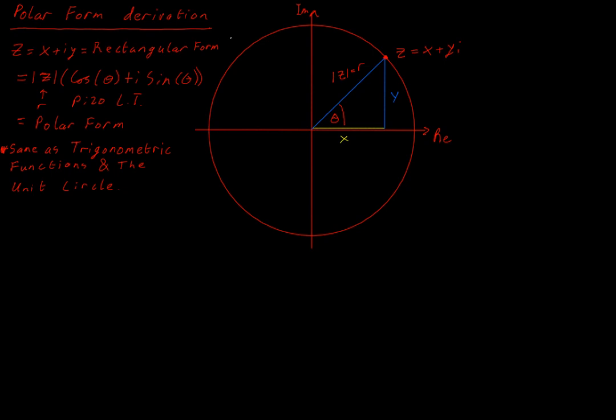Hello. Today we are going to look at deriving something called polar form, which is a version of complex numbers where we focus on the angle between the complex number, or the complex number's modulus, and the positive real axis.